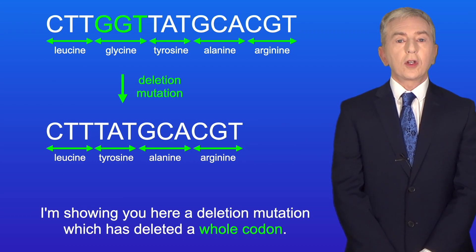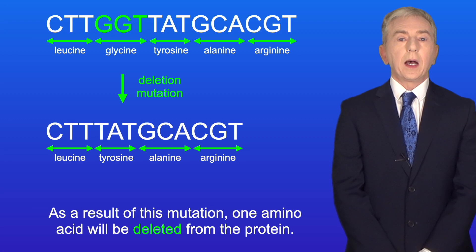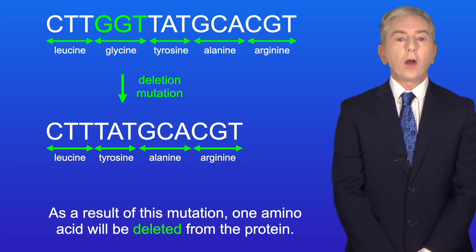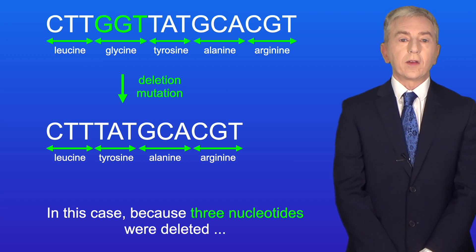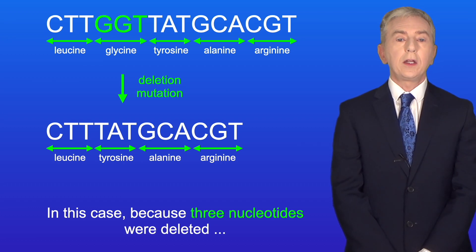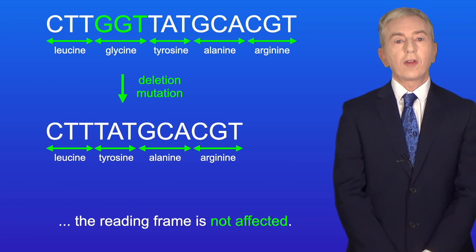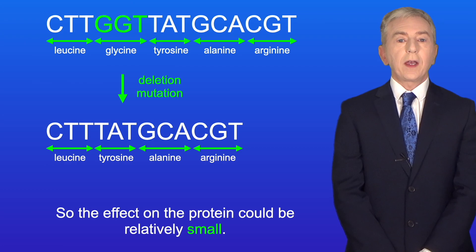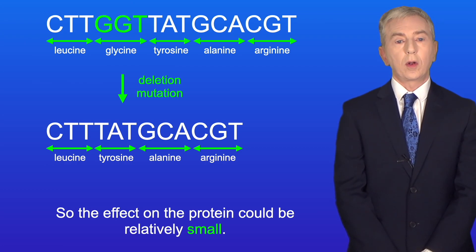Here is a deletion mutation which has deleted a whole codon. As a result of this mutation, one amino acid will be deleted from the protein. In this case, because three nucleotides were deleted, the reading frame is not affected, so the effect on the protein could be relatively small.